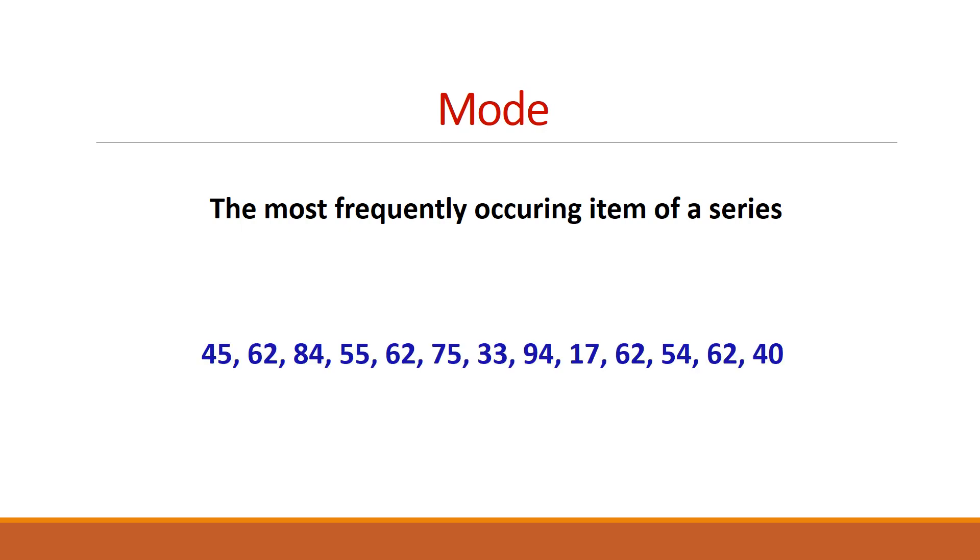See, in these values, which value is occurring the highest time? The 62. See, the first time 62, second time 62, third time 62, and the fourth time 62. So, 62 is occurring four times. And no other values are occurring this many times. That is why we can say mode of this group is 62.